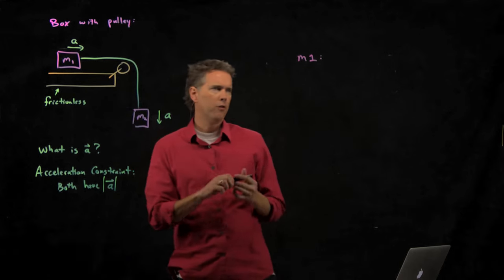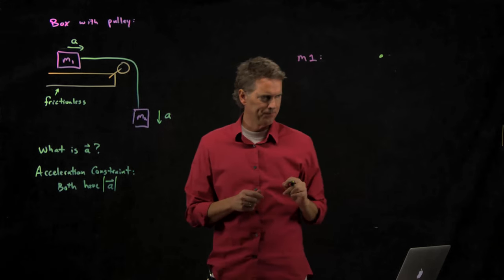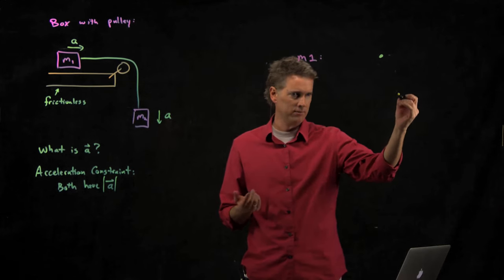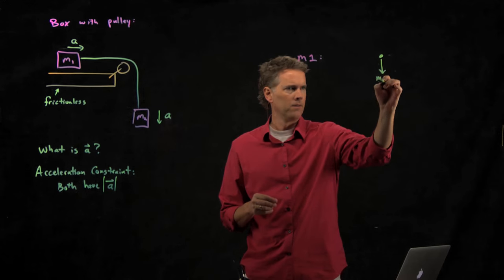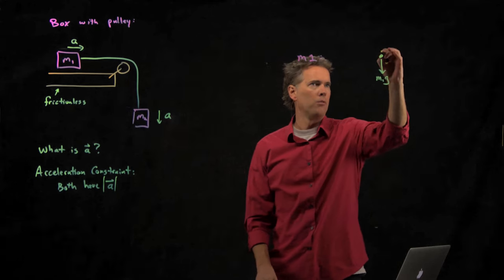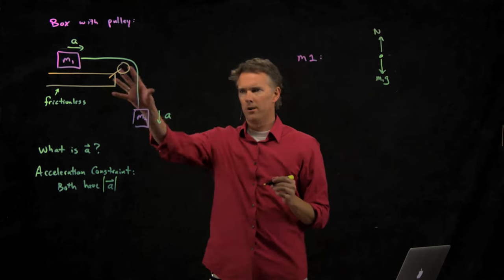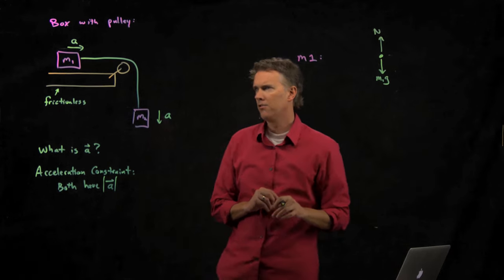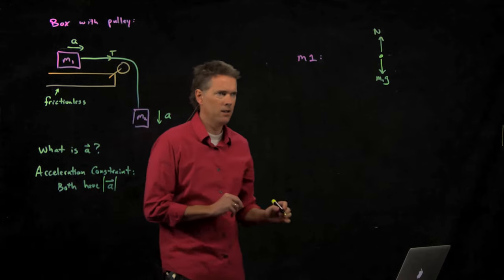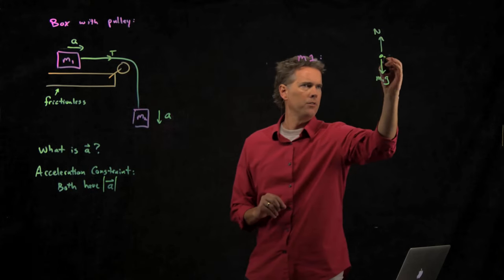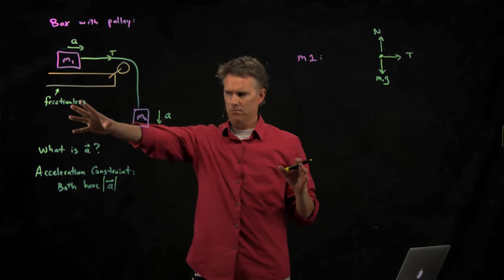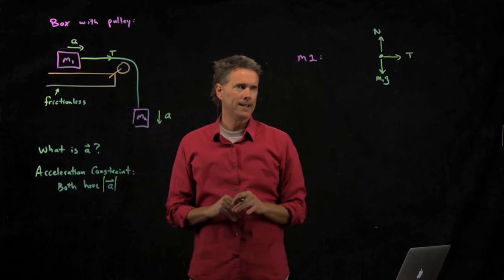Let's identify all the forces that are acting on M1. What's acting on M1? What's the first thing we always draw? Gravity. What else is acting on M1? Normal force. What else? There's something pulling on it, namely this rope. If we say that the rope has tension T, tension T is a force to the right. And that's it. There's no friction. So that's all the forces that are acting on M1.